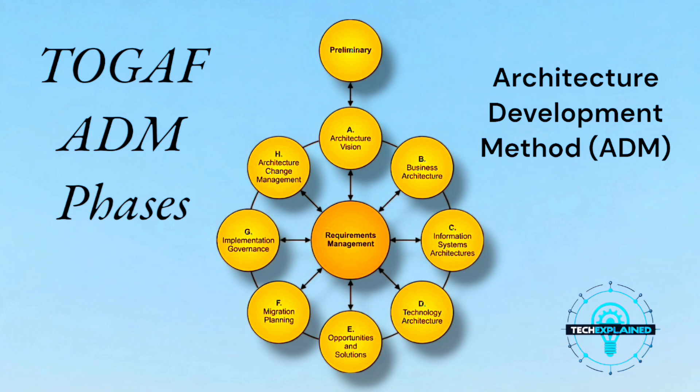We start with the Preliminary Phase. This is like laying the groundwork for your dream house — you figure out the basics: what's the purpose of the project, who's involved, and what tools you'll use. In the enterprise world, this is where you define architecture principles, governance frameworks, and the team structure. Think of it as deciding whether you're building with Legos or bricks, and who's on your construction crew.